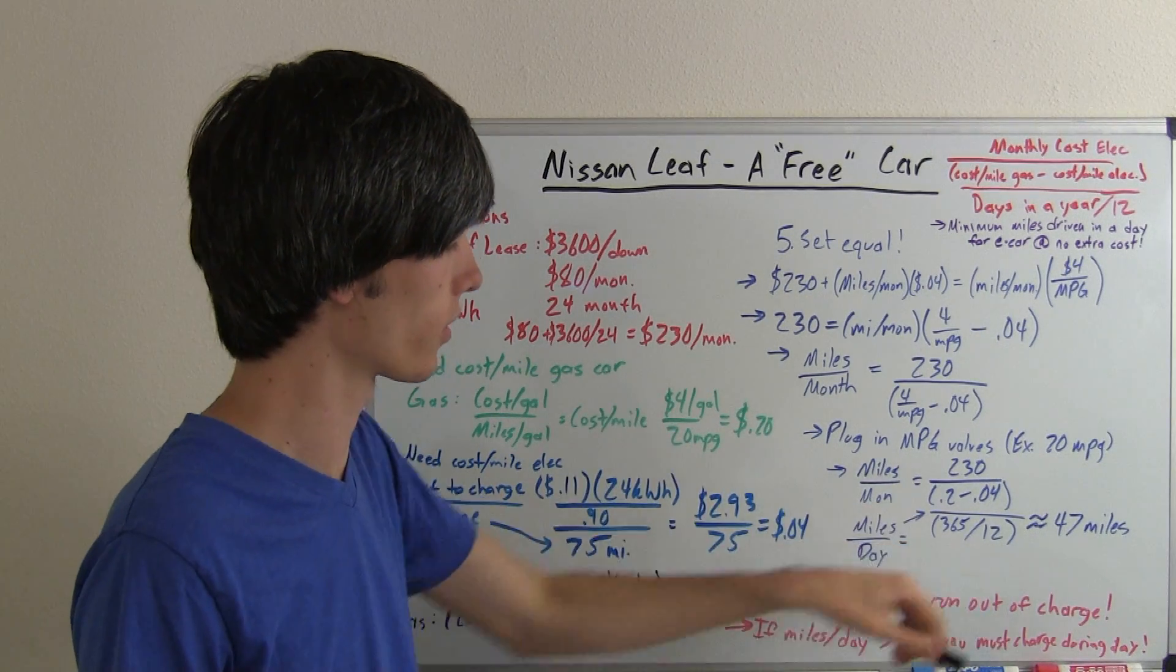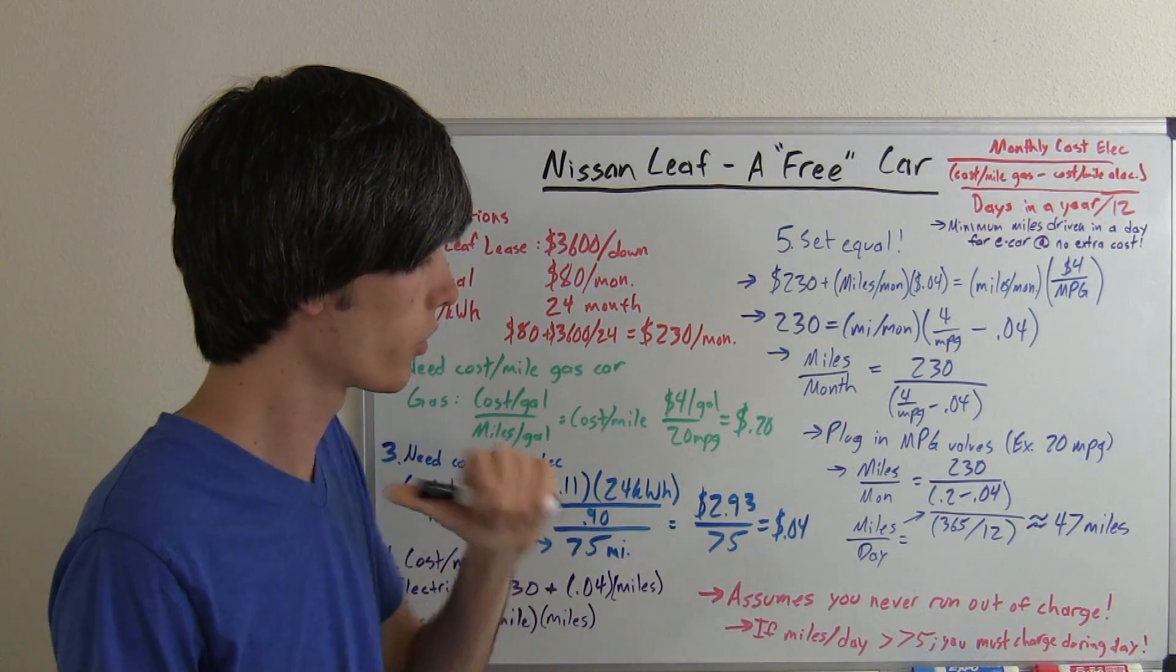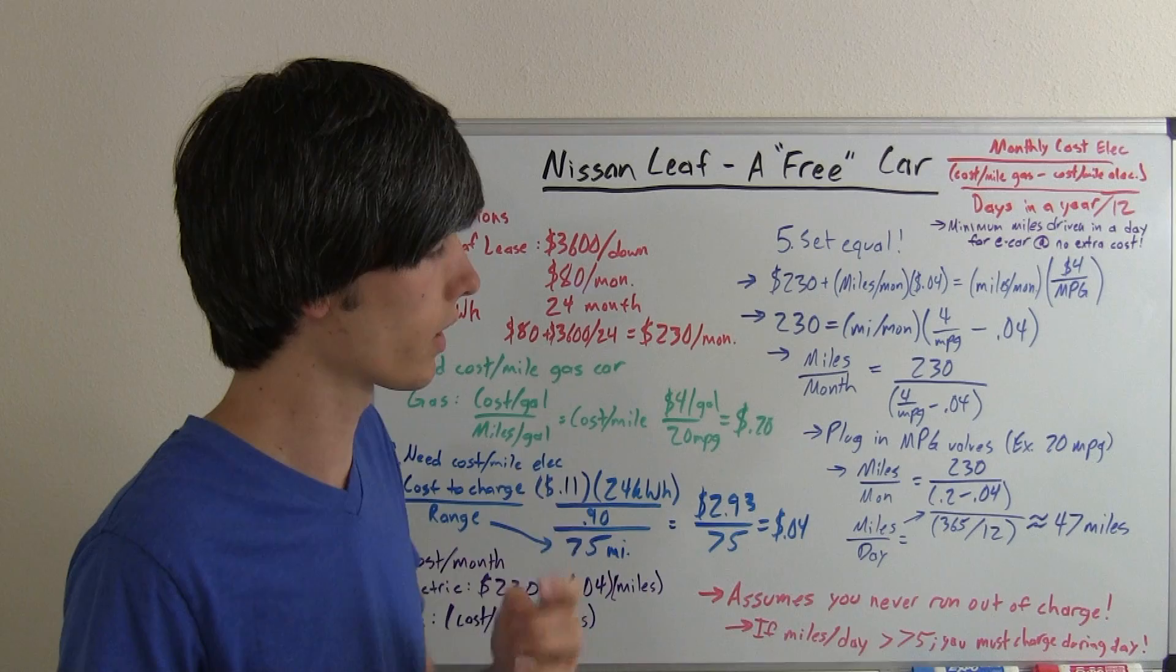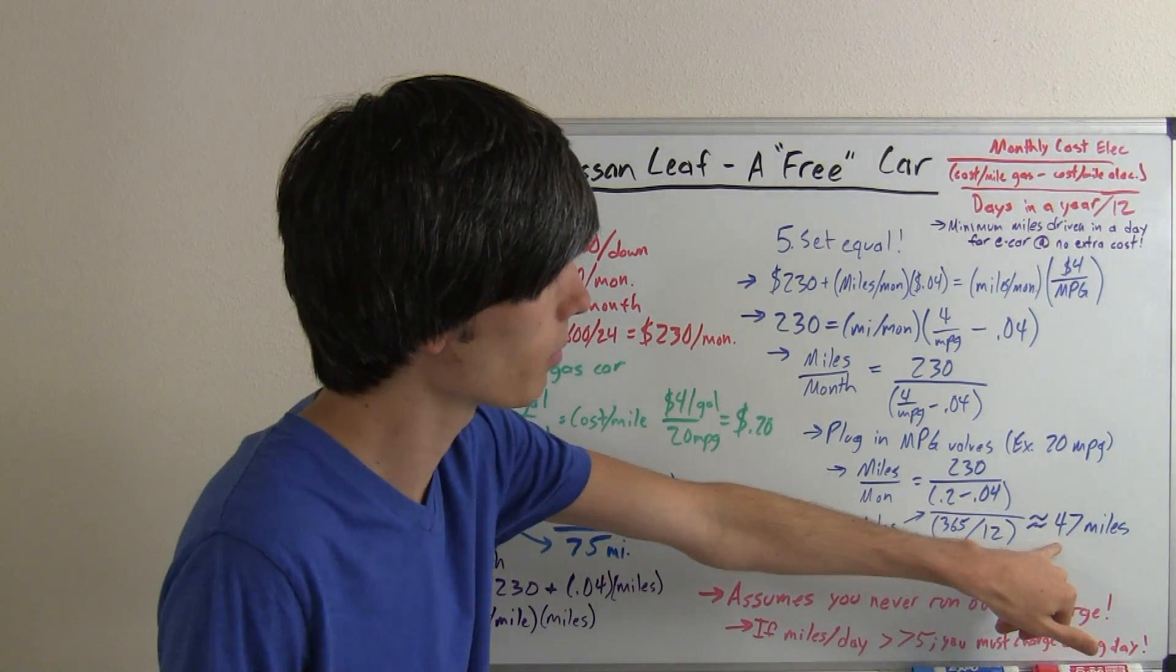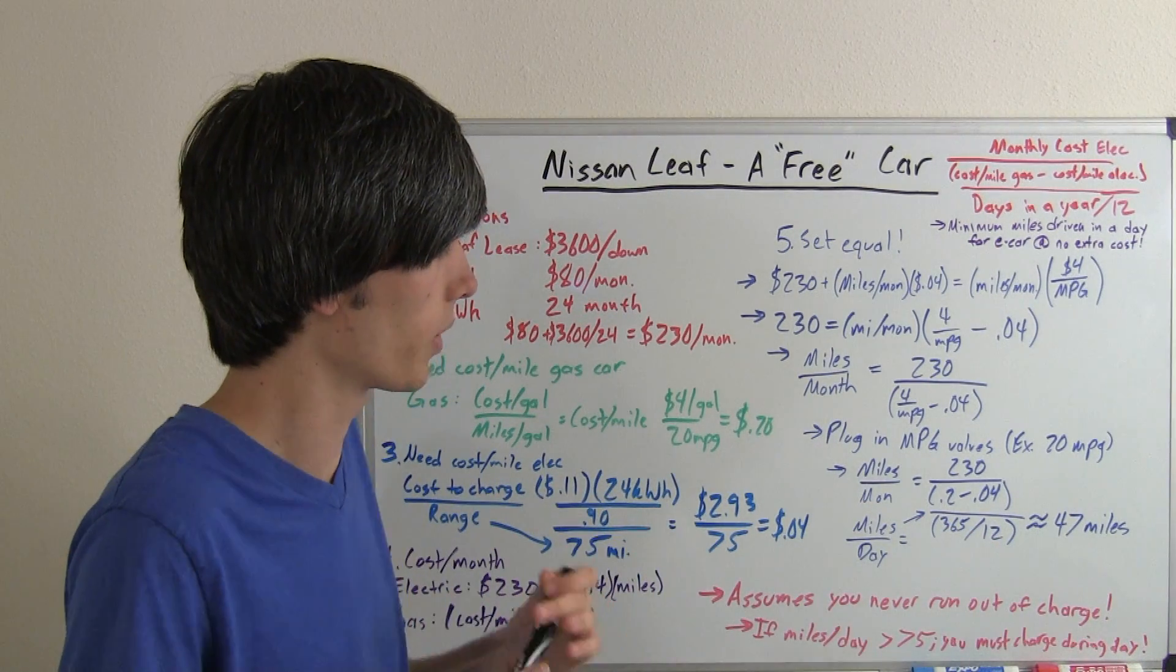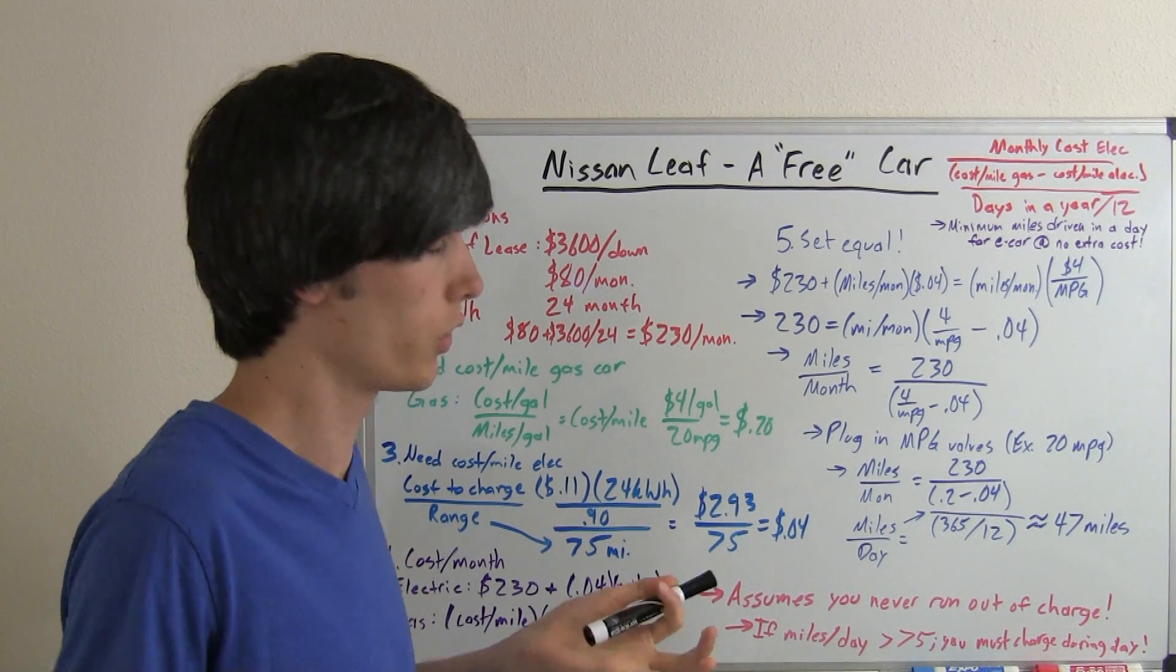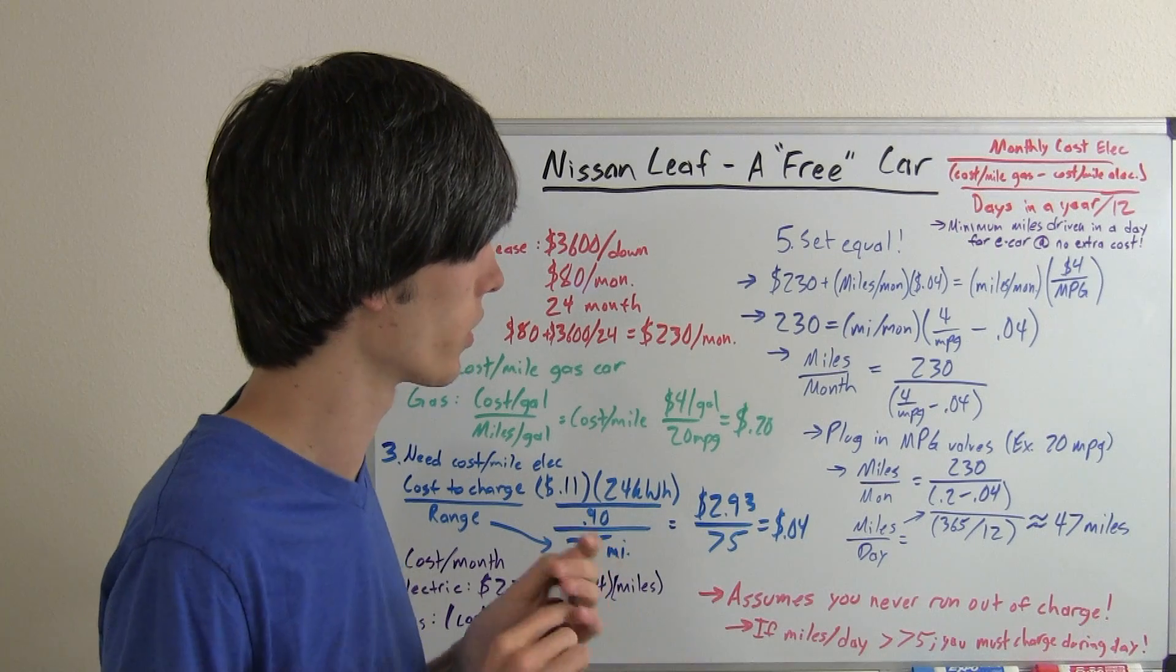One thing to take in mind when using this equation is, it assumes you never run out of battery charge. If this number here is greater than 75, and you actually drive greater than 75, you need to take into consideration that you're going to have to charge that during the day. Say this number was 100. Say you have a 50-mile commute to work. Hopefully not, but some people do. 50 miles to work, you get there, you charge your car, and you've got 50 miles back. That could work out if you can charge your car while it's at work. But you need to keep that in mind for your own personal consideration.